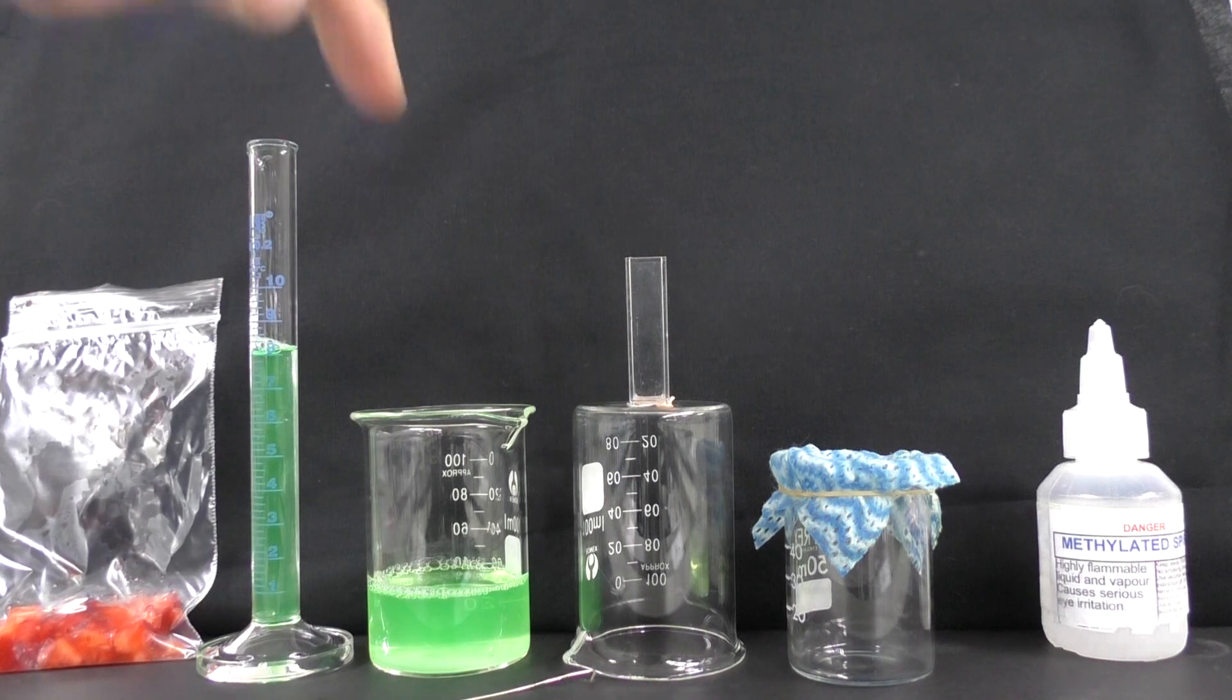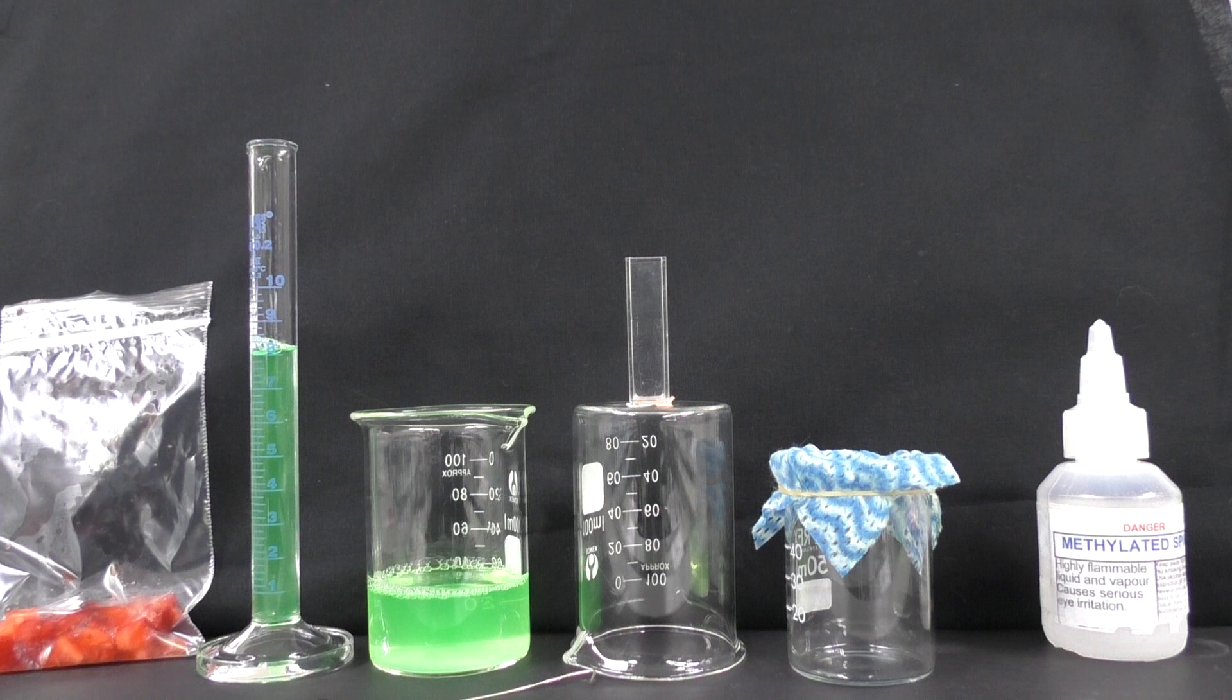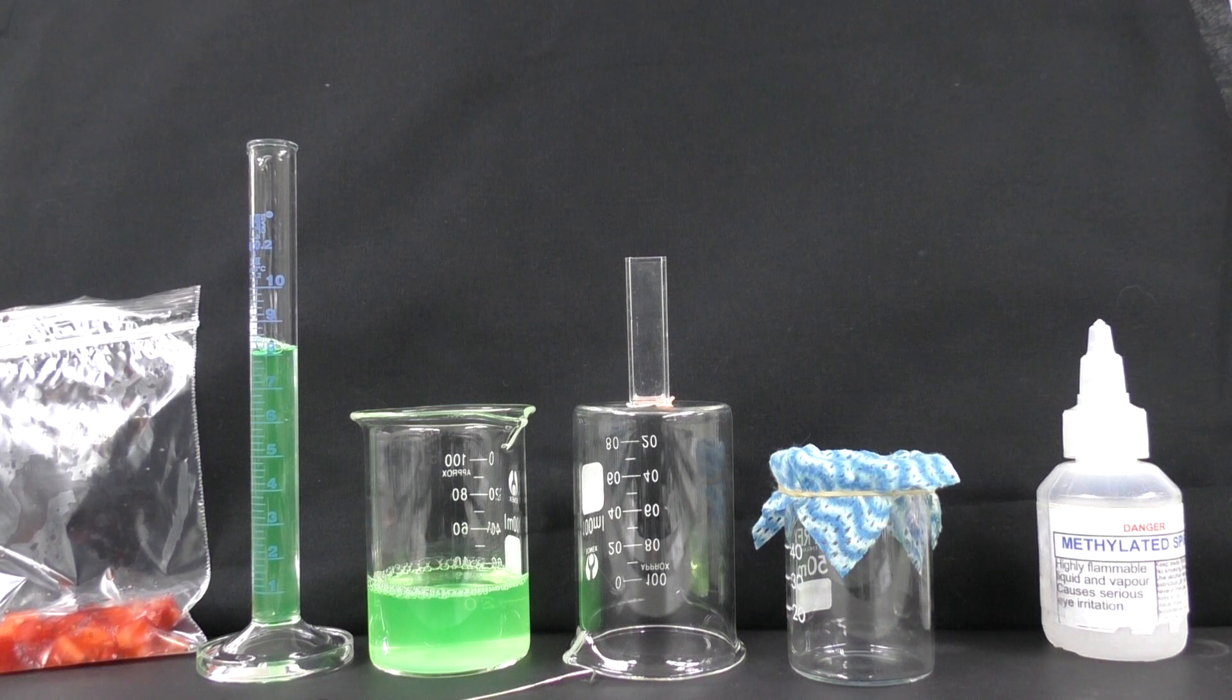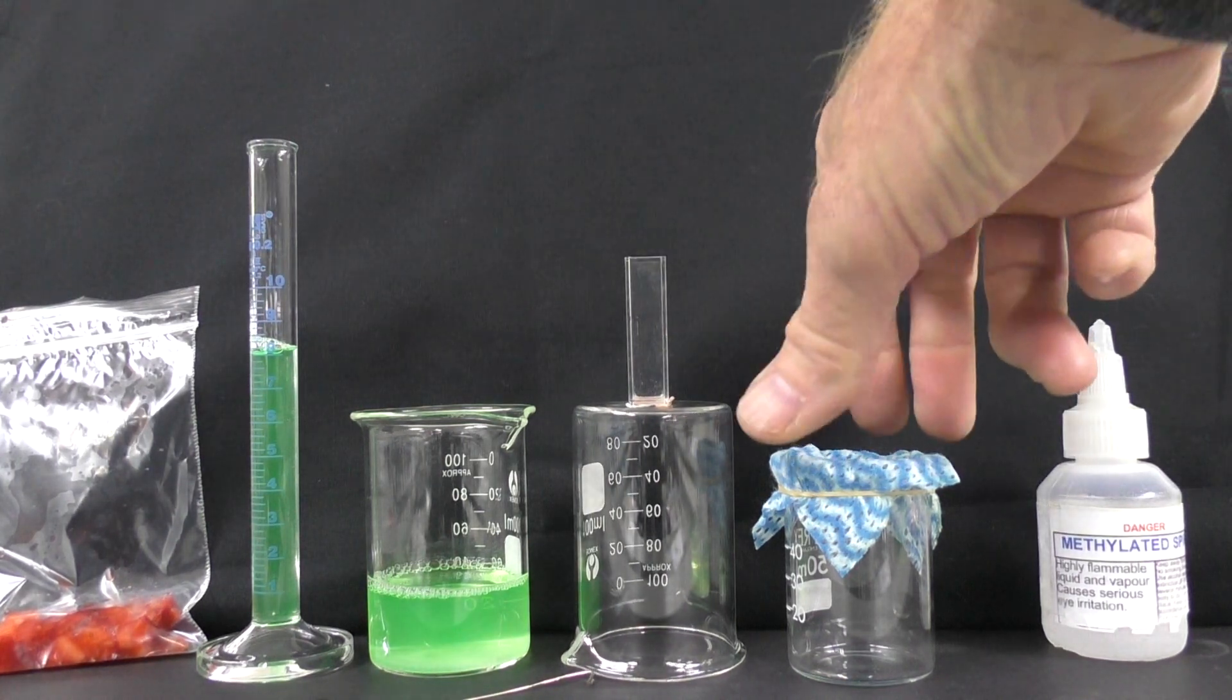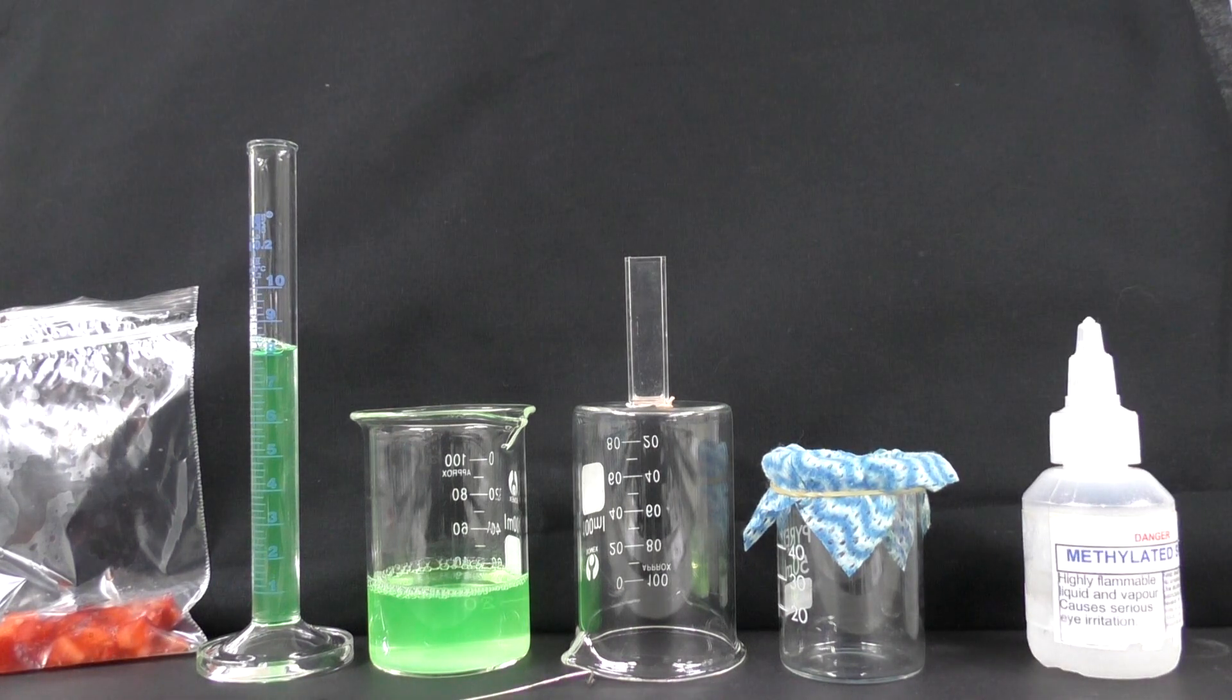We've got a detergent, water and salt mix which is about 100ml of water, one teaspoon of detergent and half a teaspoon of salt. We've got a vial here, a little beaker we're going to do some filtering into, and some cold methylated spirits.